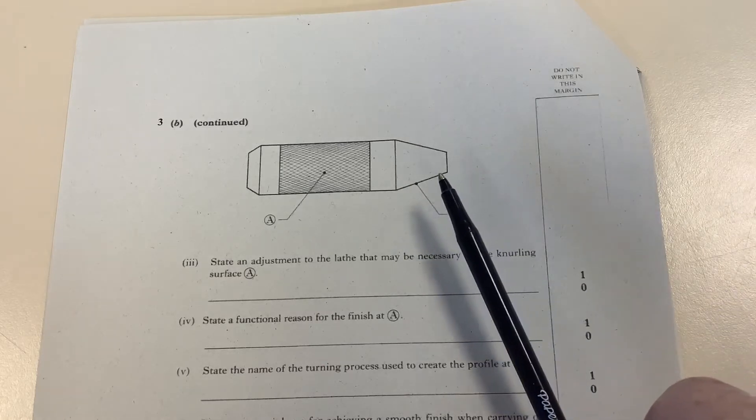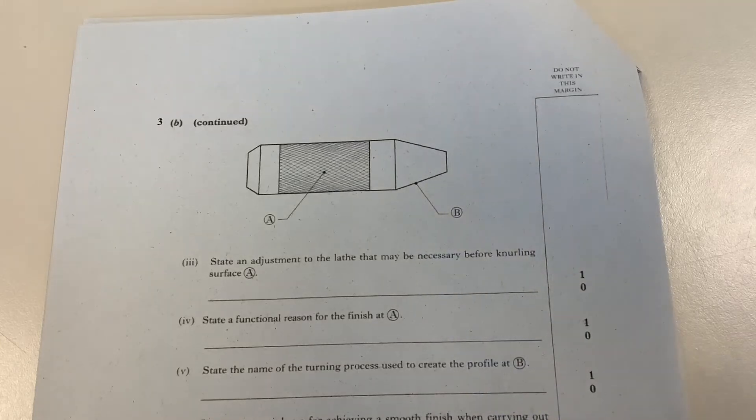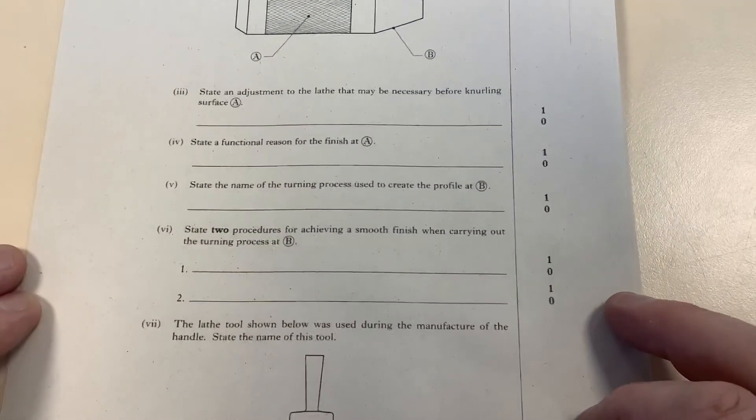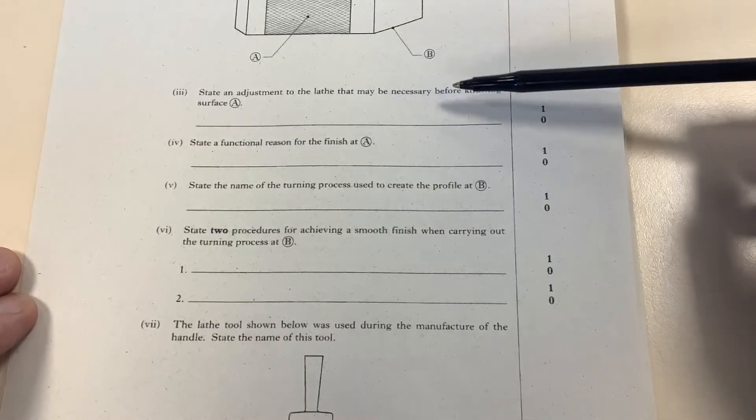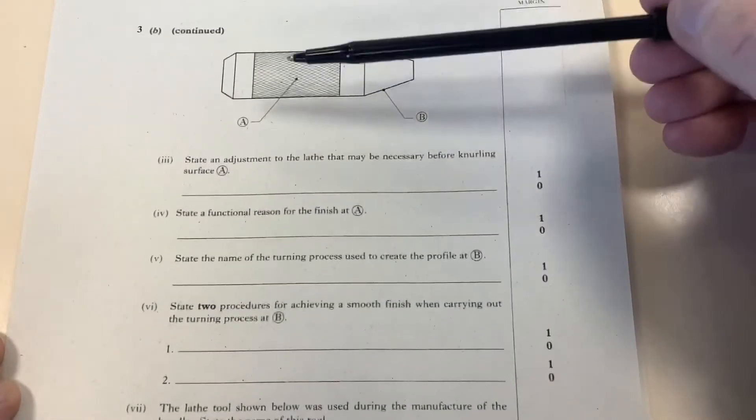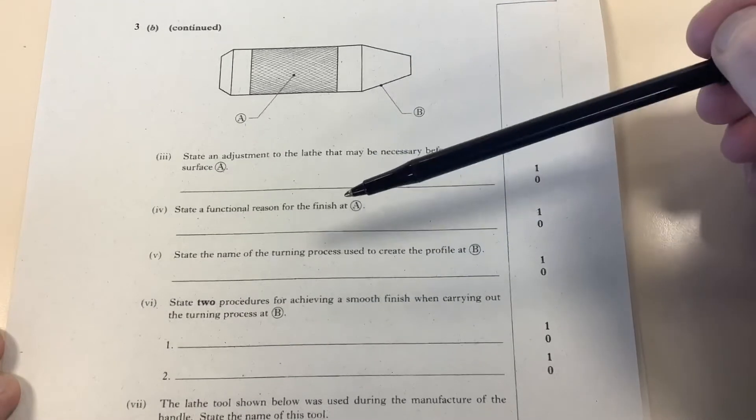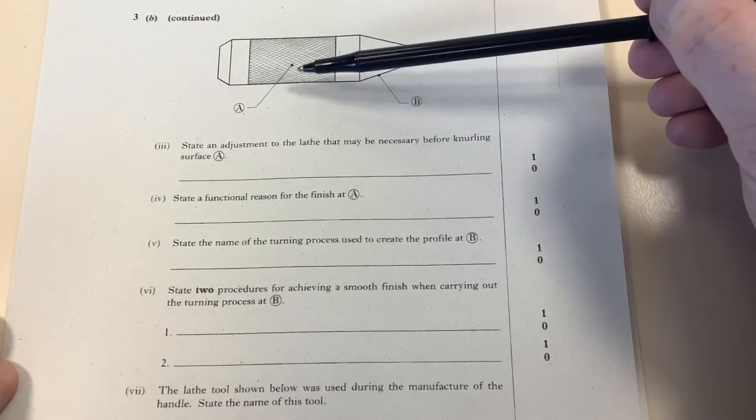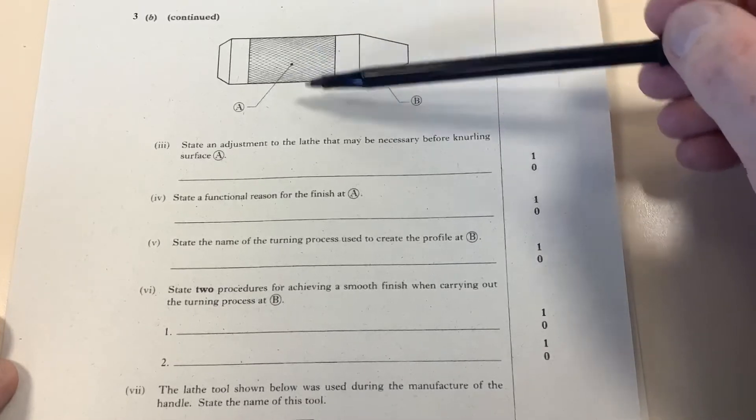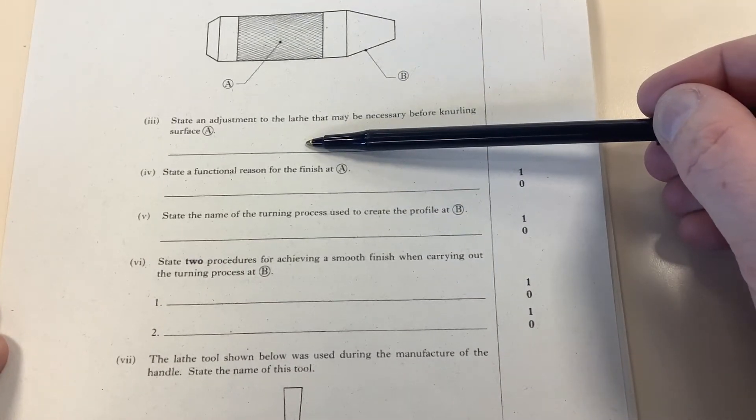Now, some more questions regarding the lathe. State an adjustment to the lathe that may be necessary before knurling. You should know this diamond pattern here is knurling, produced with a knurling tool. This is an indent, not actually cut—the cutter just indents the metal rather than cuts it to create this effect. The adjustment would be making sure the lathe is set at a slow speed.